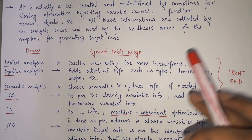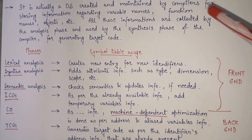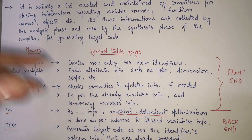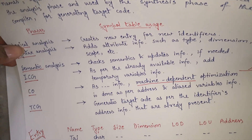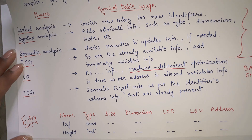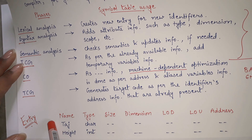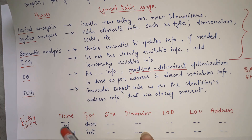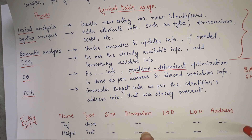So I hope you have understood what the symbol table is and the usage of the symbol table by each phase. The last thing you should know is how the symbol table entry looks. The main attributes that should be there are: name, type, size, dimension, line of declaration, line of usage, and address. These are the seven important attributes of the symbol table.